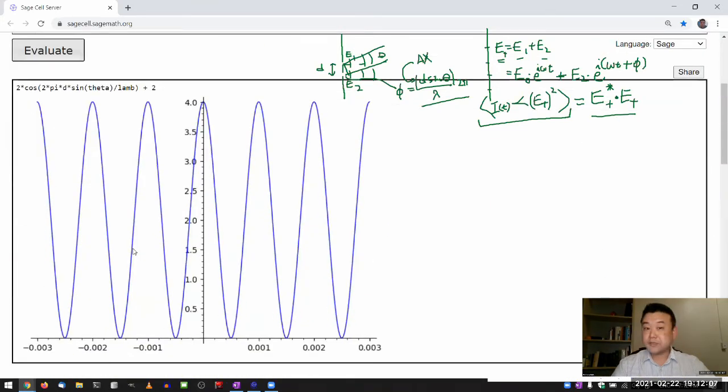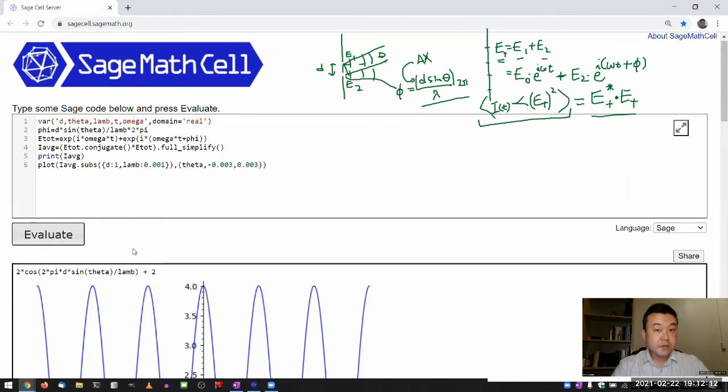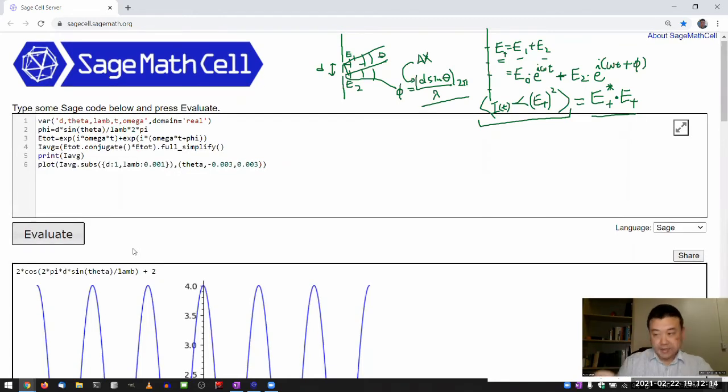So yeah, that's a double slit interference. And let me read the additional slits. This is basically the idea here.